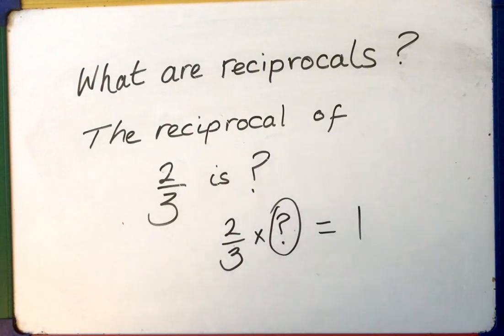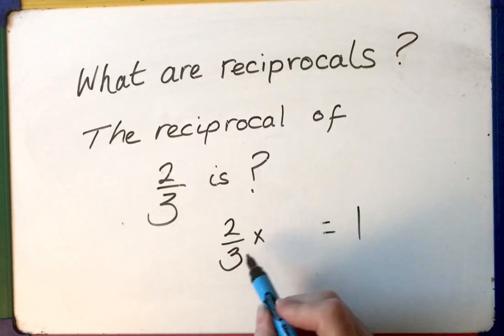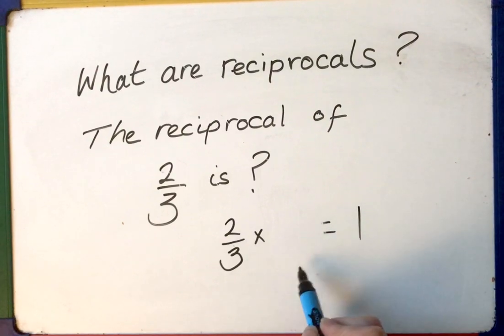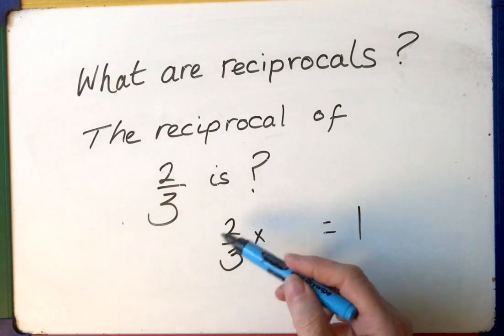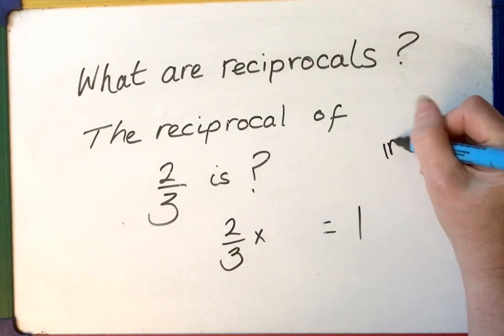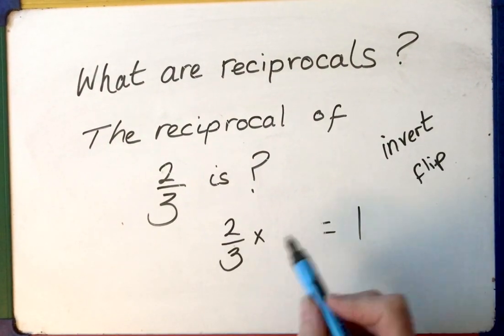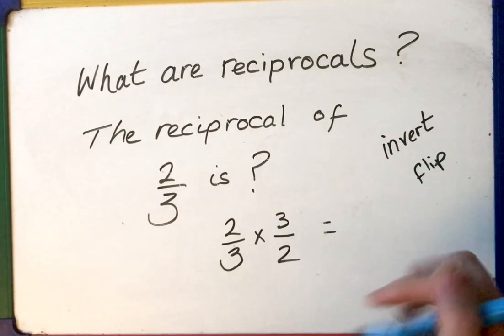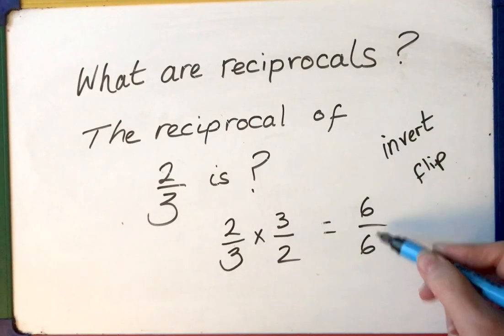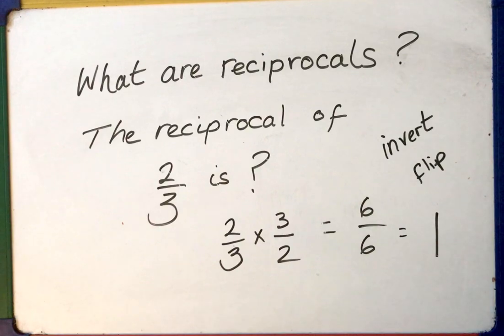If you've watched the video on multiplying fractions, you'll know that two times something over three times something equals one. That means the top and the bottom have to be the same. I'm going to invert — flip it upside down — so three over two. Two times three is six, three times two is six, and six divided by six is one. So two thirds and its reciprocal three over two — multiply them together, the answer is one.